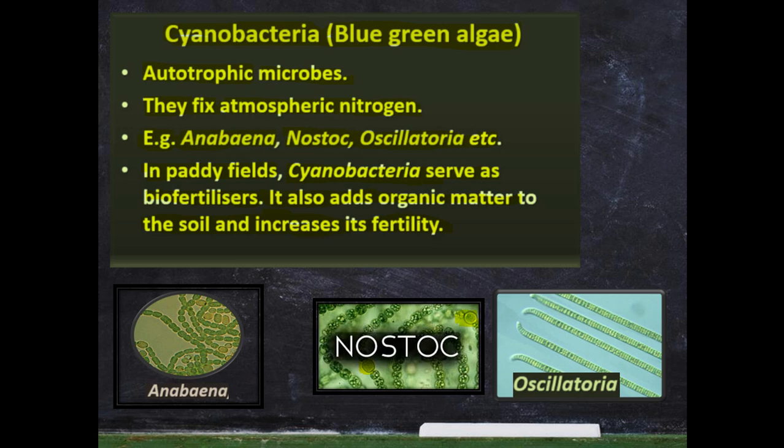Regarding Anabaena — one important point: Anabaena is found in symbiotic association with Azolla, a water fern also called the mosquito plant. Anabaena fixes atmospheric nitrogen within this association.